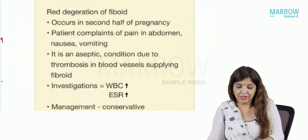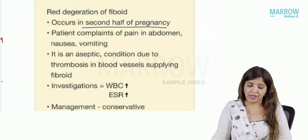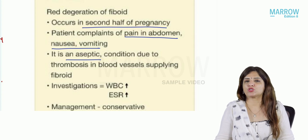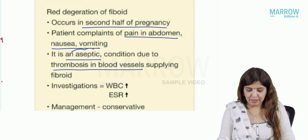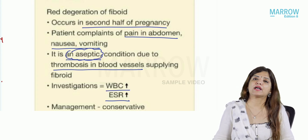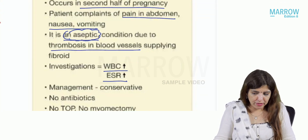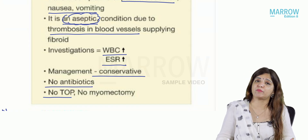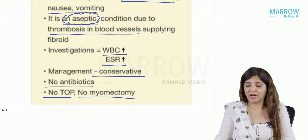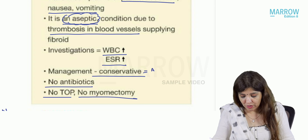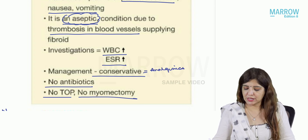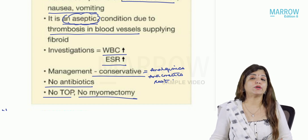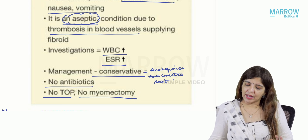Red degeneration of fibroid occurs in the second half of pregnancy. A pregnant female will complain of pain in abdomen, nausea, and vomiting. It is an aseptic condition which occurs because of thrombosis in blood vessels. Although it is aseptic, WBC count and ESR are raised. Management of red degeneration is always conservative — no antibiotics, no termination of pregnancy, no myomectomy. Give analgesics, anti-emetics if vomiting, and rest.